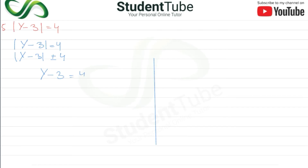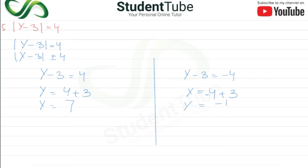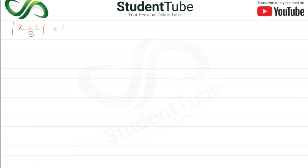So: y - 3 = 4 and y - 3 = -4. For the first case, y = 4 + 3 = 7. For the second case, y = -4 + 3 = -1. So the solution set is equal to {-1, 7}.